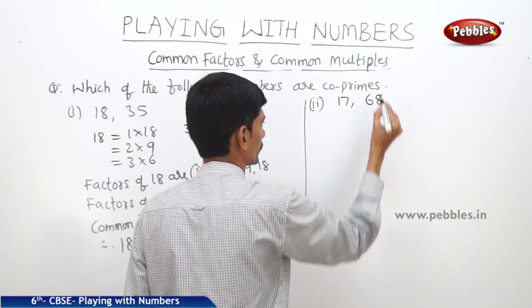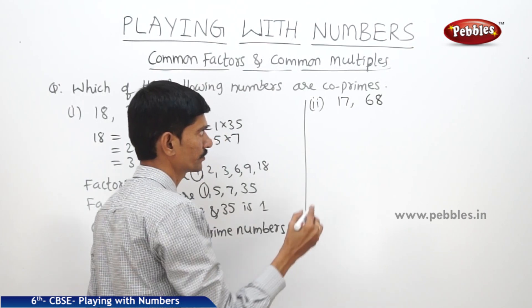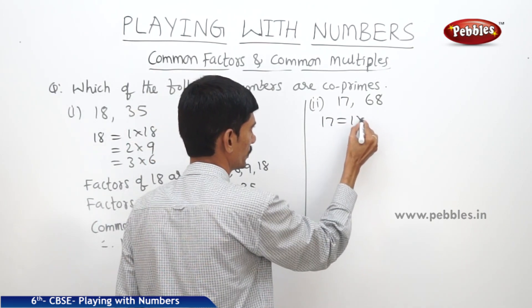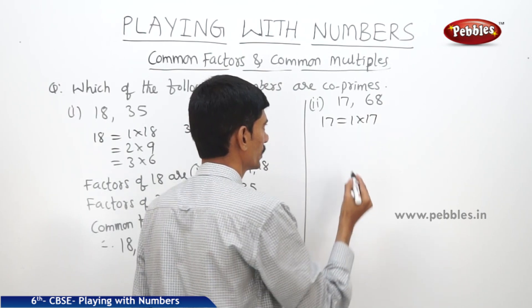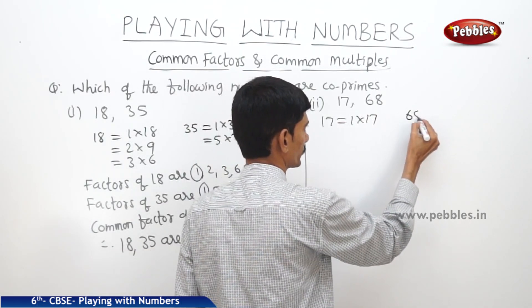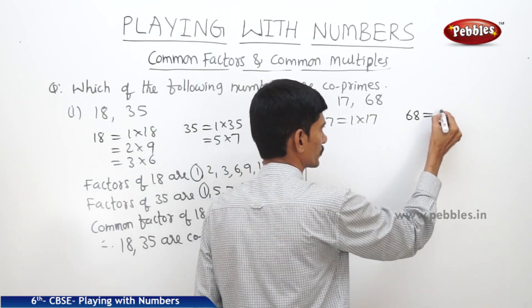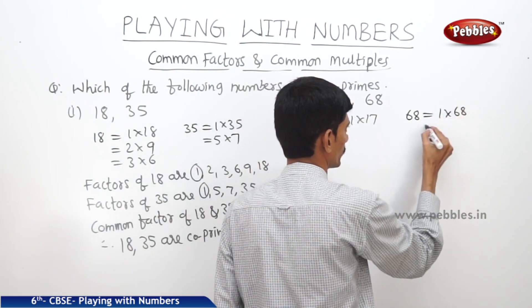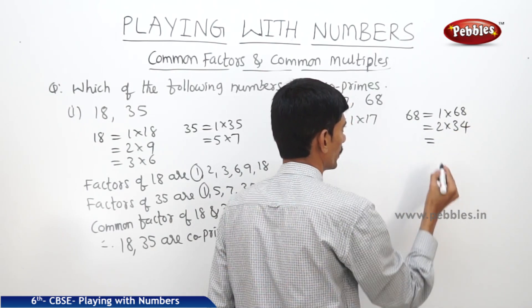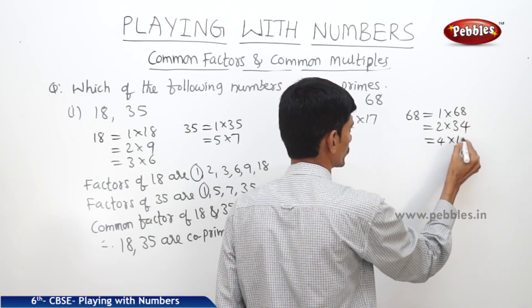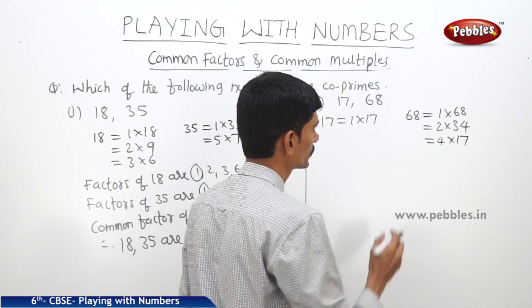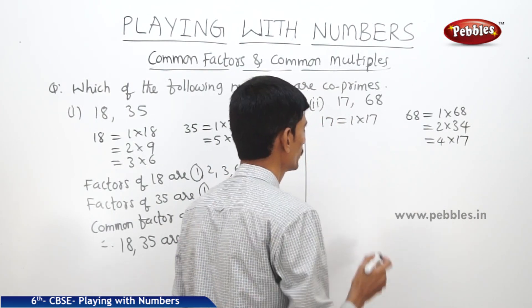Now let us check the next question: 17 and 68. The factors of 17: 1 into 17, and it is not divisible by any other number. The factors of 68: 1 into 68, 2 into 34, and 4 into 17. That's all — it is not divisible by any other number.